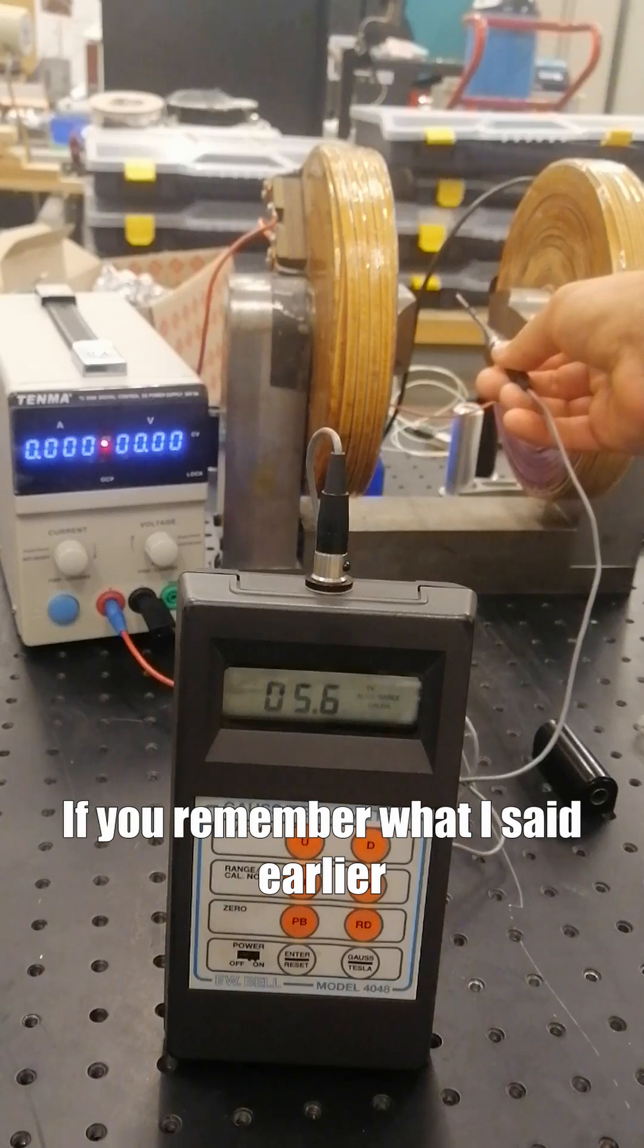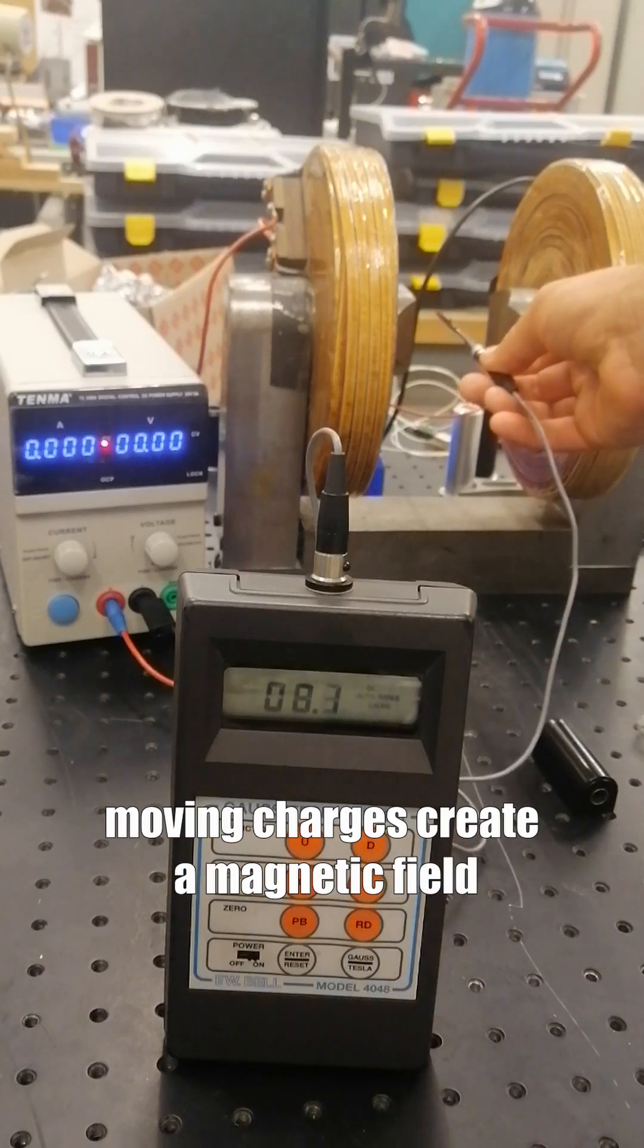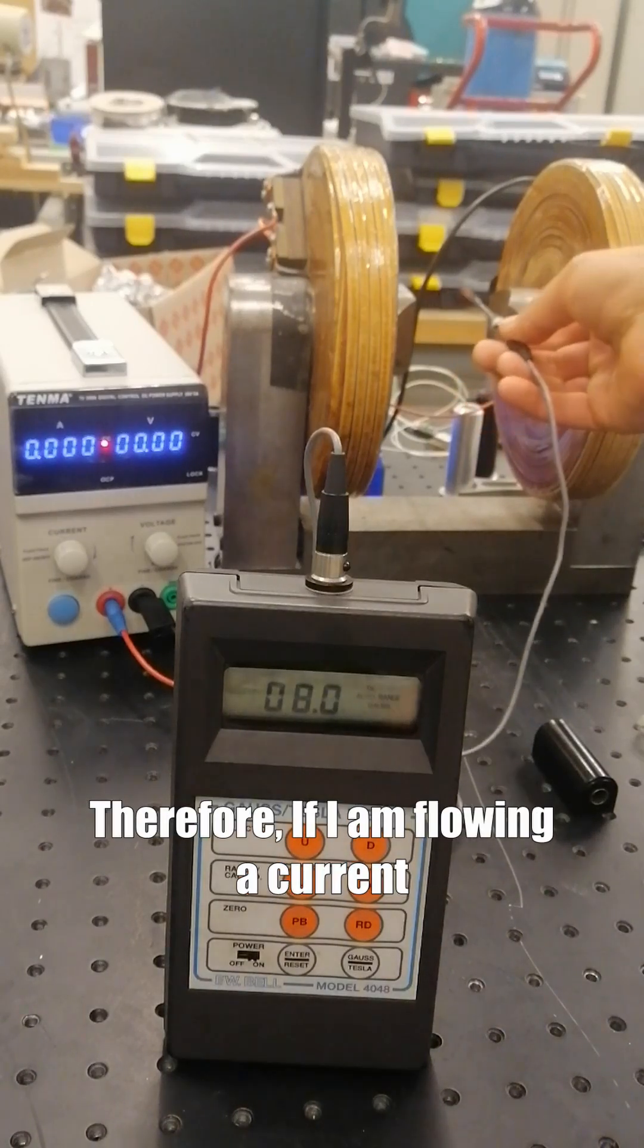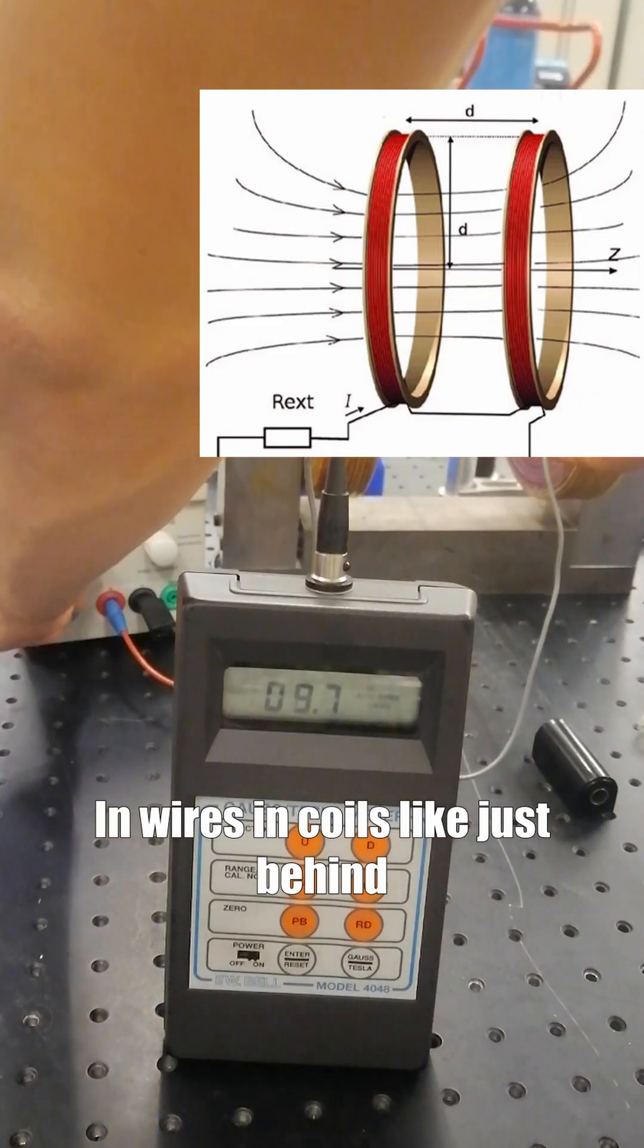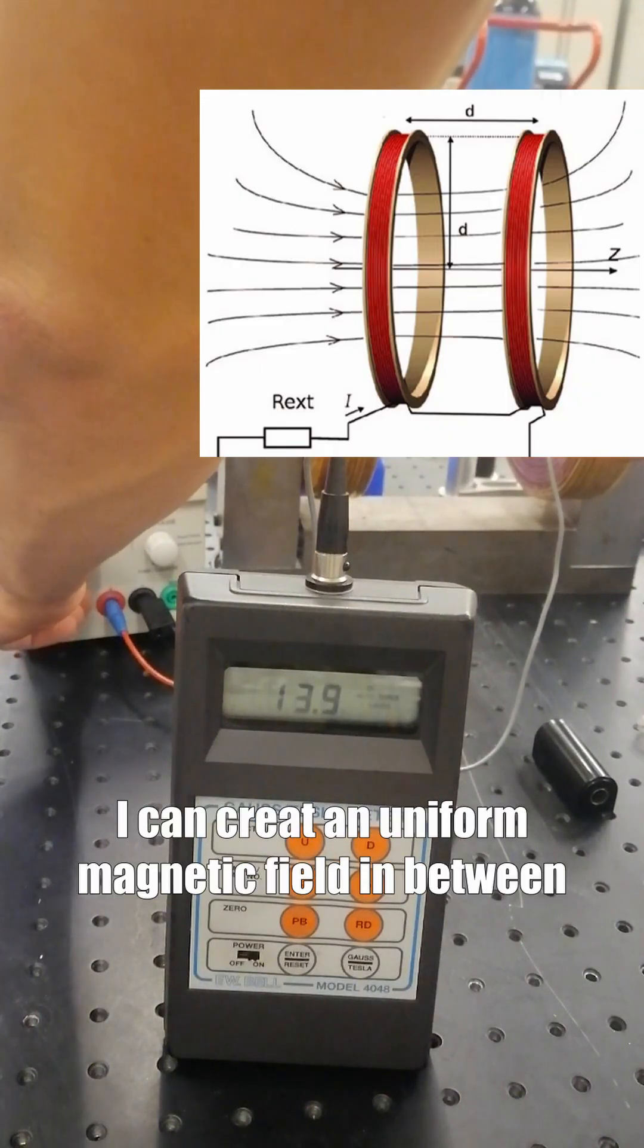If you remember what I said earlier, moving charges create a magnetic field. Therefore, if I'm flowing a current in wires in coils, like just behind, I can create a uniform magnetic field in between.